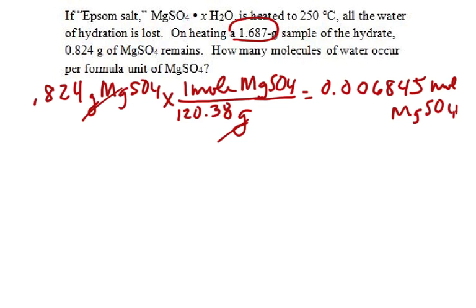Now the other thing we did, we subtracted and found out that we have 0.863 grams of water. If we know grams, we can change that to moles. Water is 16 for oxygen, 1.01 for each of the hydrogens.